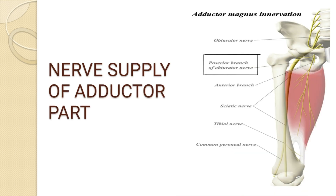The adductor magnus muscle is called a hybrid muscle because of its double nerve supply. The adductor part is supplied by the posterior division of the obturator nerve, whereas the hamstring part is supplied by the tibial part of the sciatic nerve.